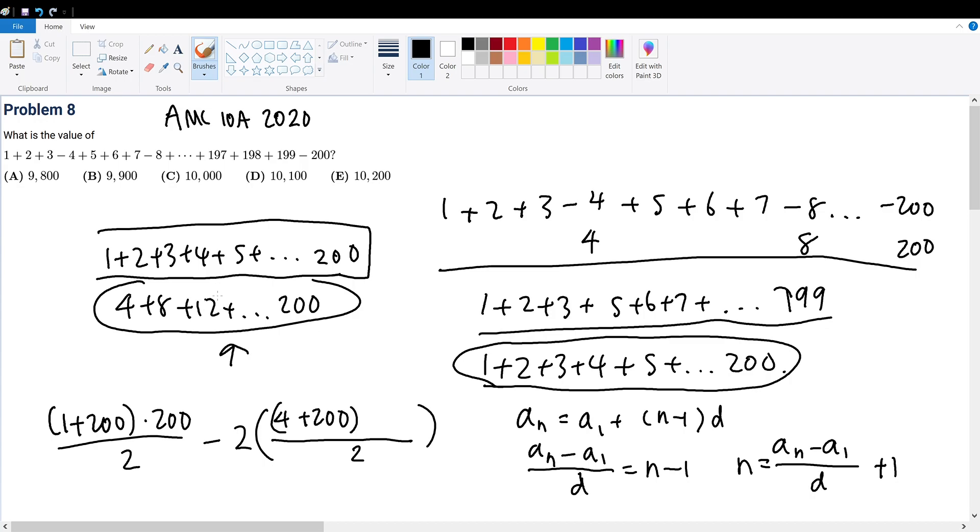So let's apply it to this sequence. n will be equal to the last number 200 minus the first number 4 divided by the common difference of 4 plus 1. This gives 196 over 4 plus 1, which is 49 plus 1, which is 50. So there are 50 terms within this arithmetic sequence.